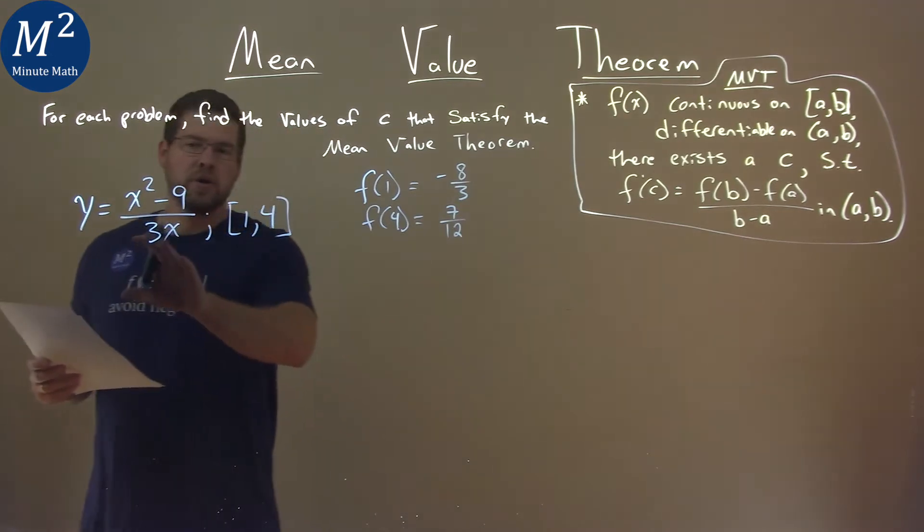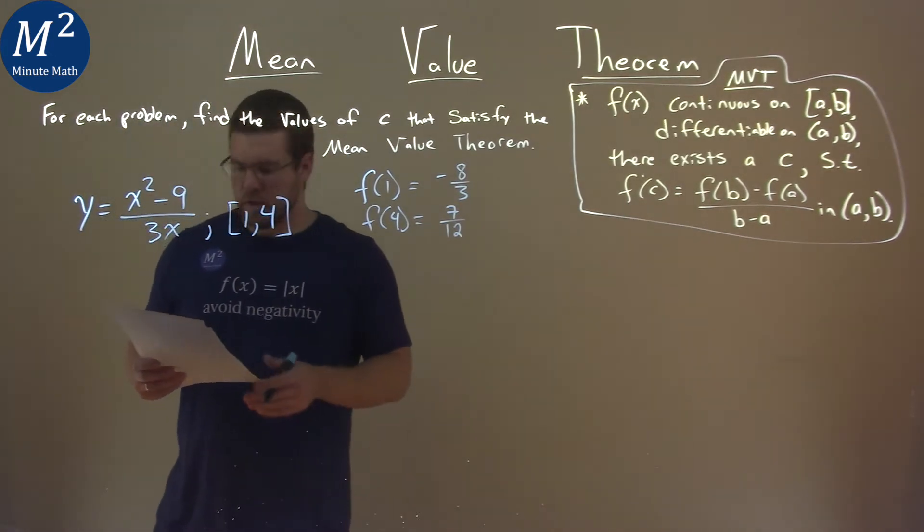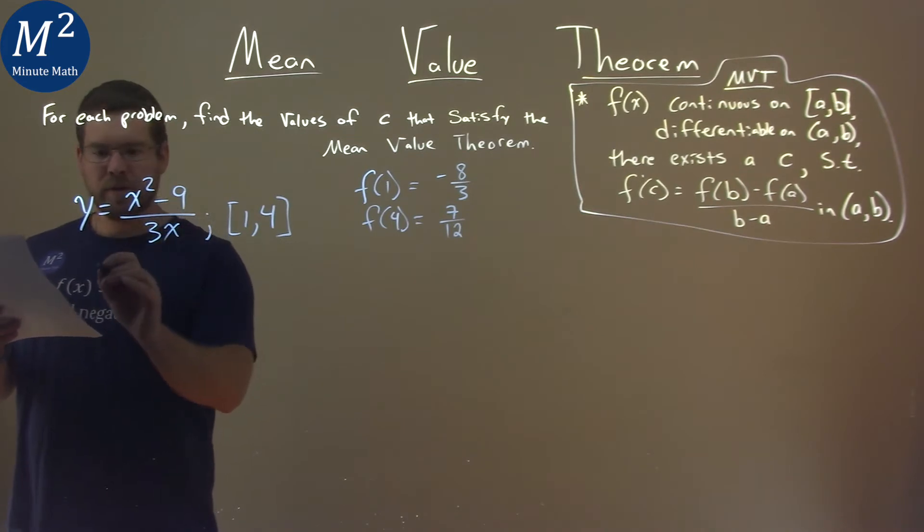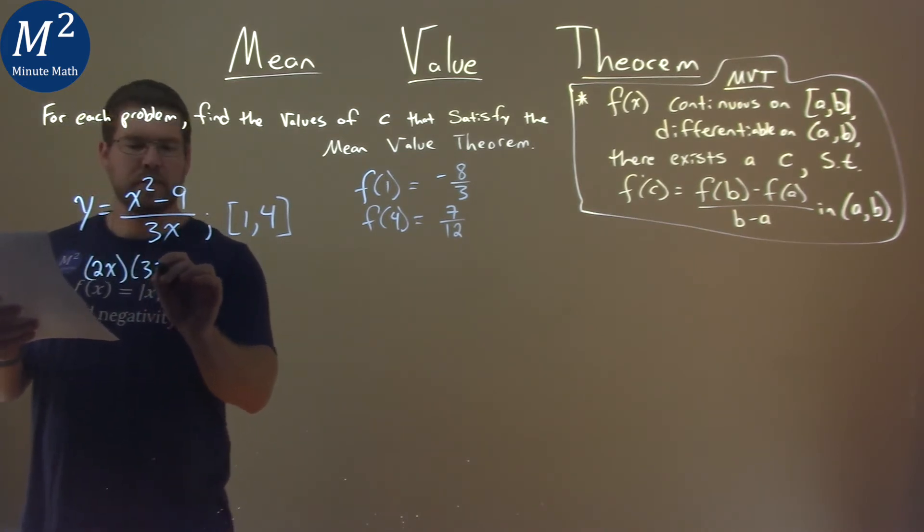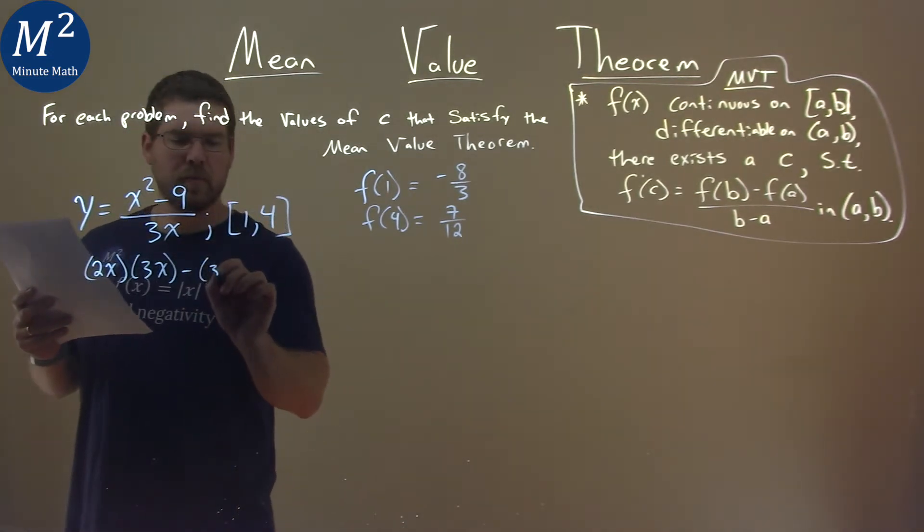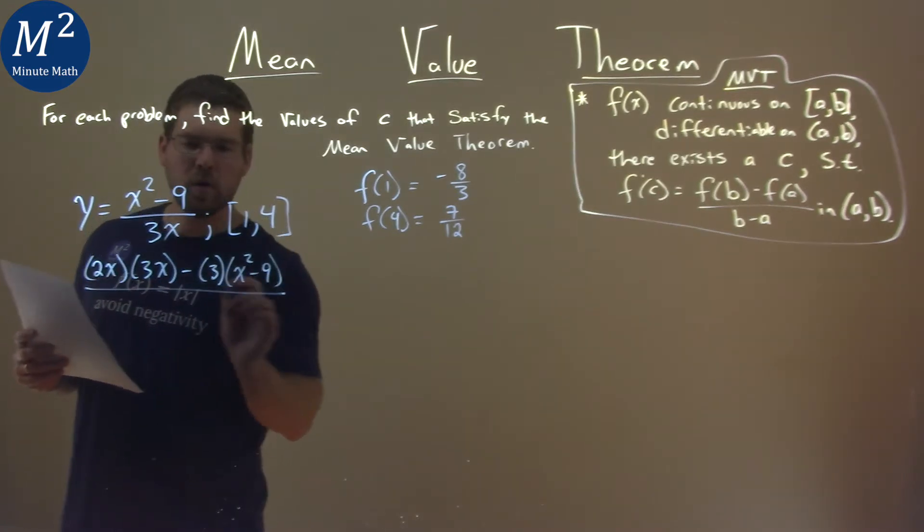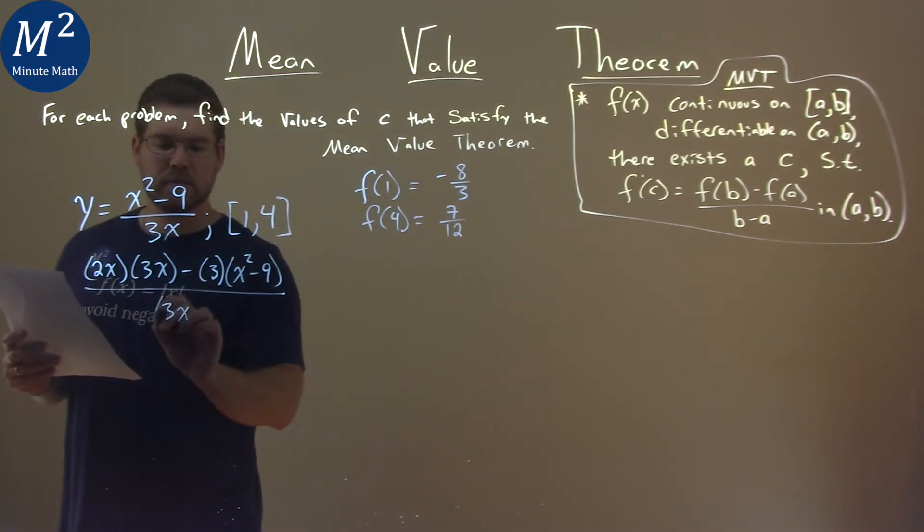From there, what we want to do is find our derivative of our function. So, derivative of the function using the quotient rule, derivative of the numerator is 2x, times the denominator, 3x, minus derivative of the denominator, 3, times the numerator, x squared minus 9, all over denominator, 3x, all squared.